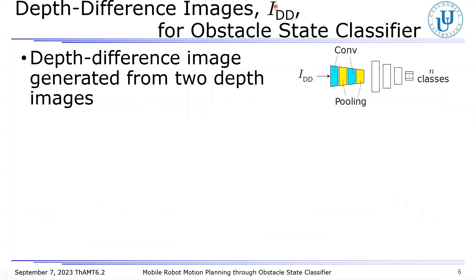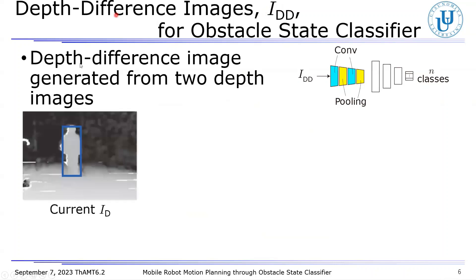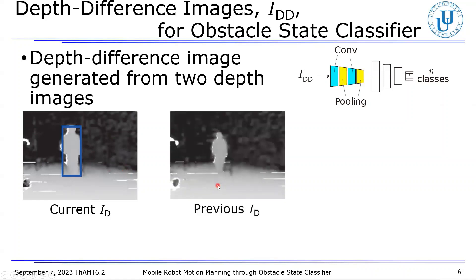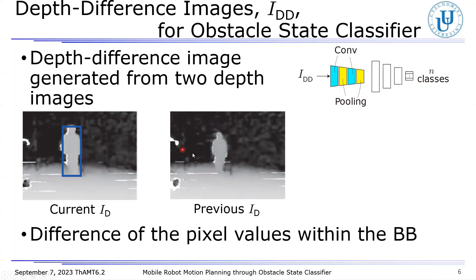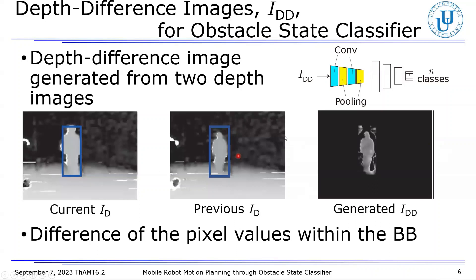For the obstacle state classifier, depth difference images used as inputs play an important role. For example, when a walking person is recognized as a dynamic obstacle in an RGB image, and the bounding box is displayed in the current depth image, as can be seen here in this figure. This figure shows a depth image acquired at the previous time step. Within the bounding box, the difference of the pixel values between the current and previous depth images are calculated. Finally, the generated depth difference image has the area outside the bounding box colored black.